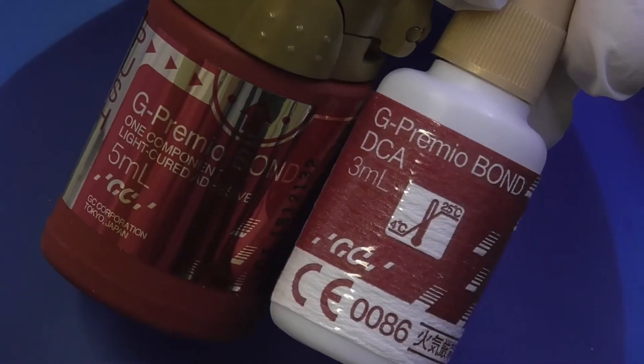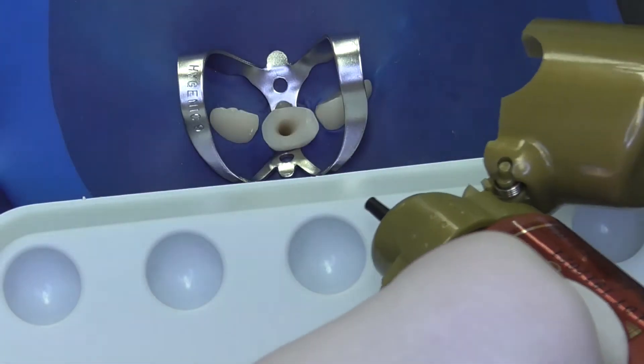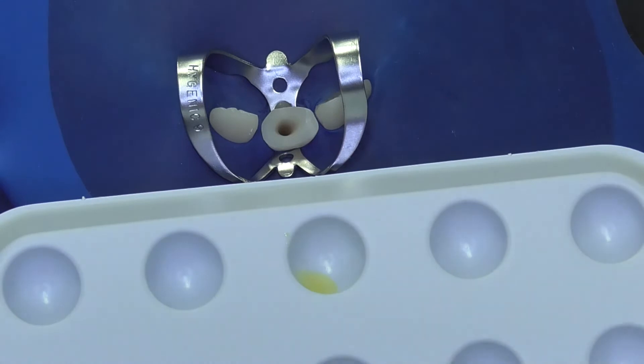In this case, we are using G-Premium Bond, which we will activate with a dual curing activator. A drop of activator will be properly mixed with adhesive, and thereafter the adhesive will be applied on the dentin surface to the root canal and to the marginal parts of the dentin.